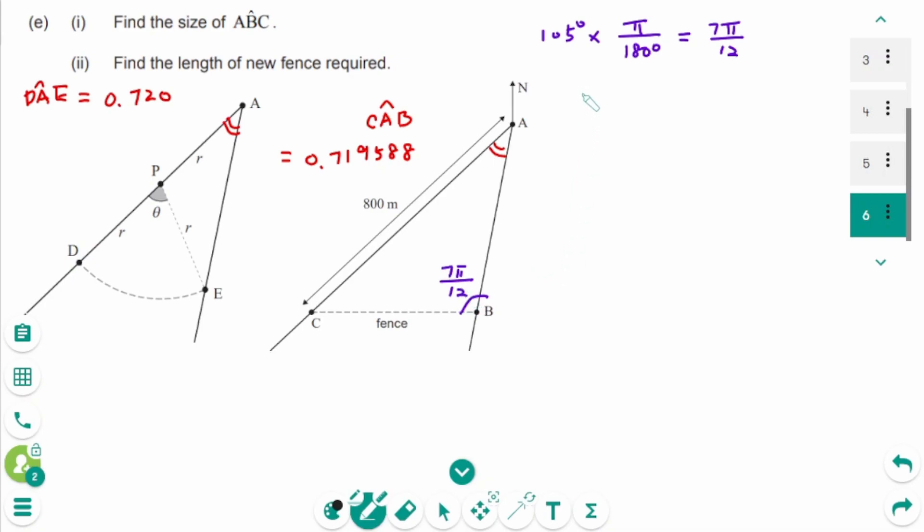Now use the sine law. A over sin A equals B over sin B. So BC over sin 0.719588 equals 800 over sin 7 pi over 12.